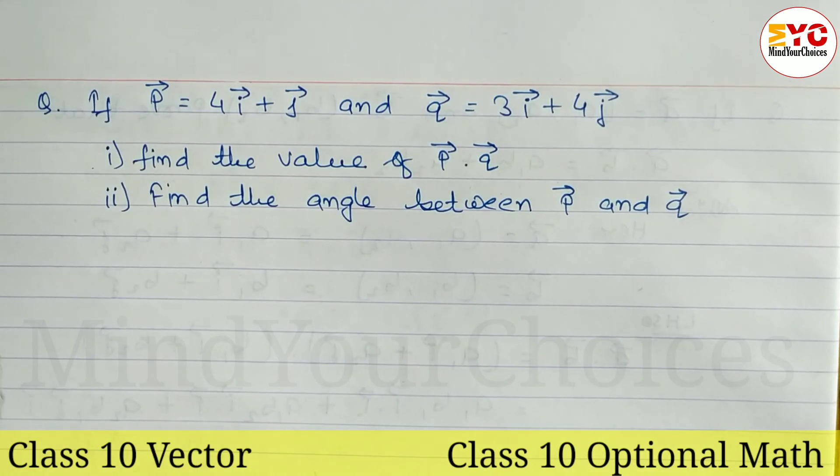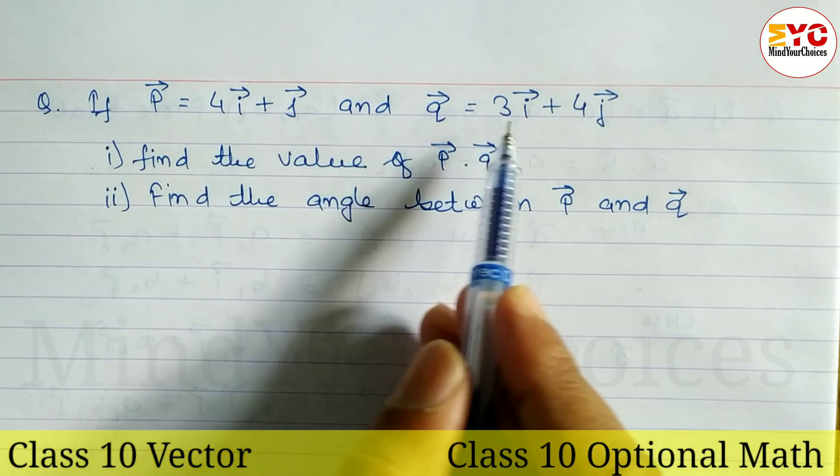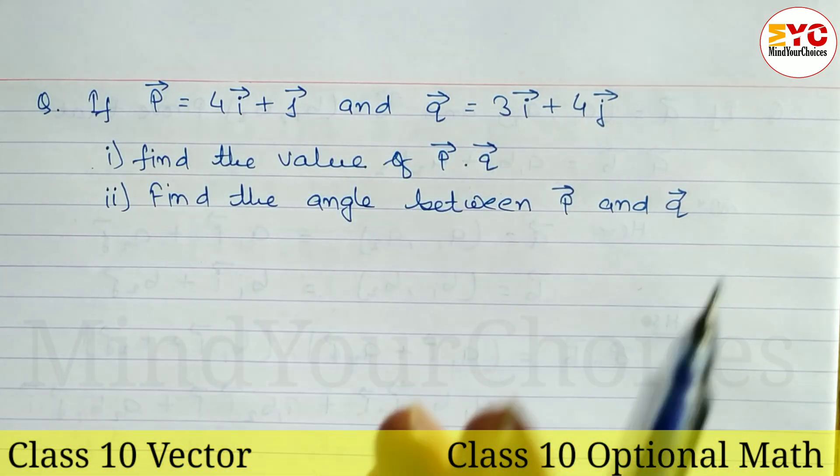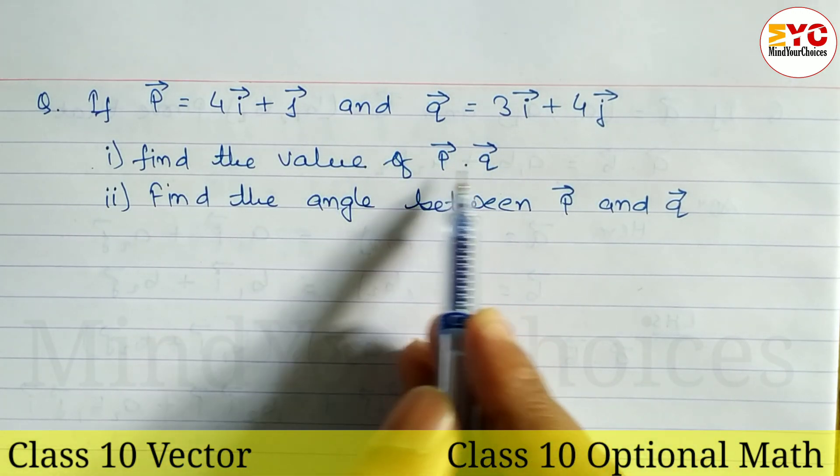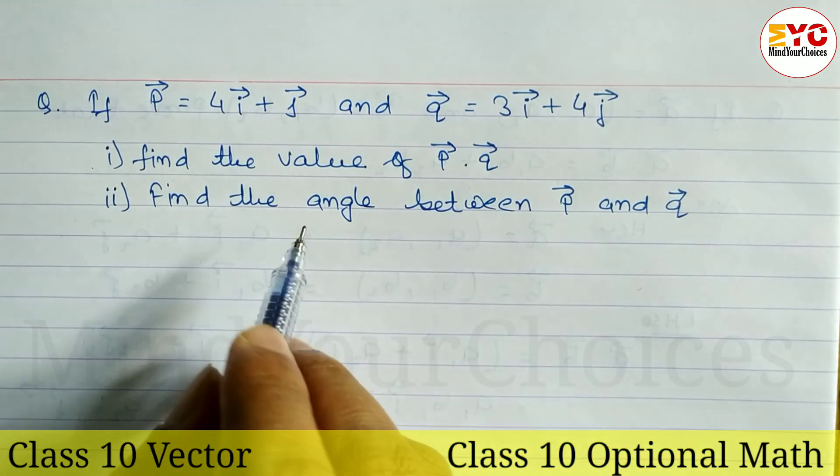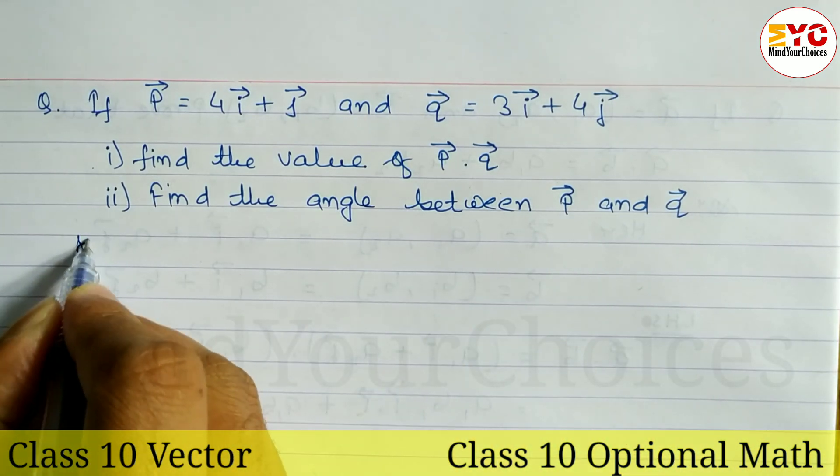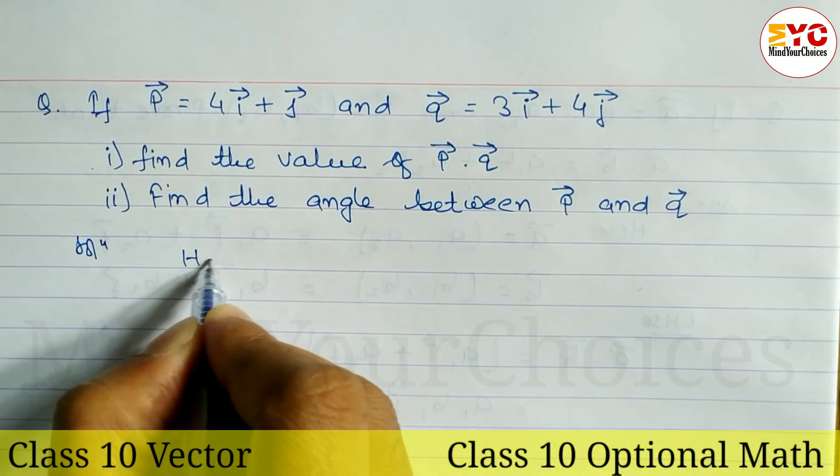Question class 10 vector. If P is equal to 4i plus j and Q is equal to 3i plus 4j, we will learn how to find out scalar product of P and Q, and how to find out angle between P and Q in this question. Let's take a start here.